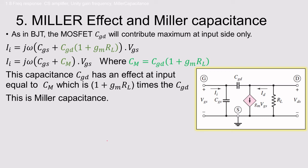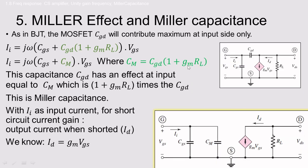So the equation becomes: Ii = jω·(Cgs + Cm)·Vgs. What this means is that the capacitance Cgd connected between input and output has an equivalent effect at the input equal to Cm = Cgd·(1 + gm·Rl). This is called Miller's Capacitance, and the formula Cm = Cgd·(1 + gm·Rl) will be used to solve problems.